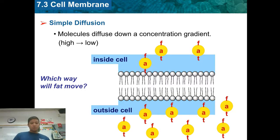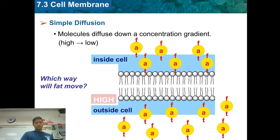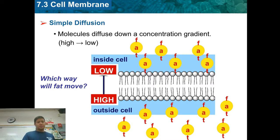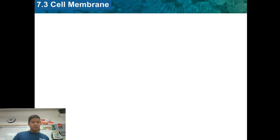Looking at an example: we've got some fat outside the cell and some fat inside the cell, but more fat on the outside than on the inside. Simple diffusion moves from high to low, so it's going to go from outside to inside.